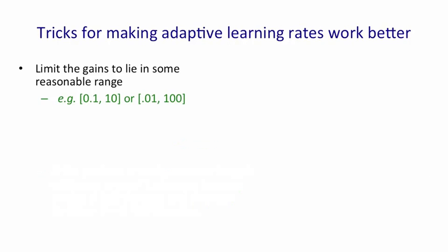There's a number of tricks for making adaptive learning rates work better. It's important to limit the size of the gains. A reasonable range is 0.1 to 10 or 0.01 to 100. You don't want the gains to get huge, because then you can easily get into an instability, and they won't die down fast enough, and you'll destroy all the weights.